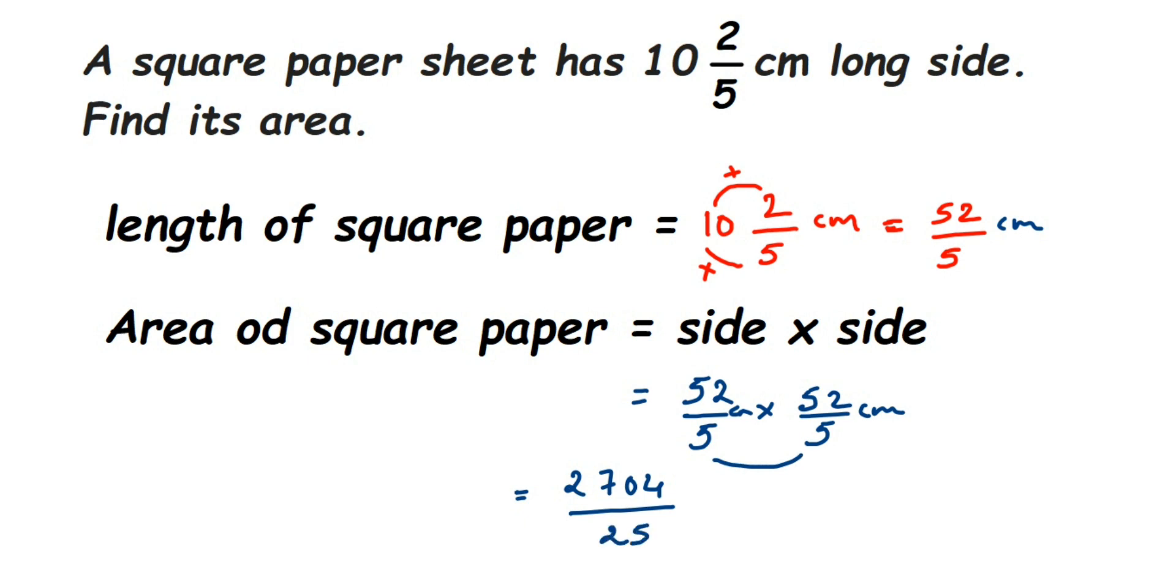Centimeter square, centimeter into centimeter is centimeter square. So this is how we can find out the area of square paper. We have just multiplied two fractions here, first converted into an improper fraction and we have just multiplied. Same way you can, we can find out the perimeter, you have to just multiply it with four.